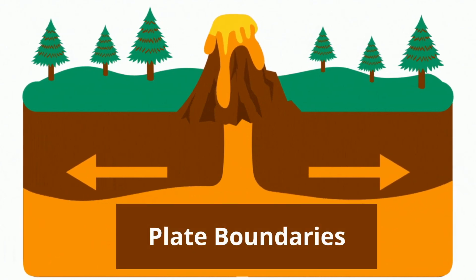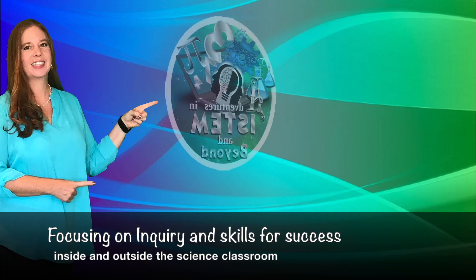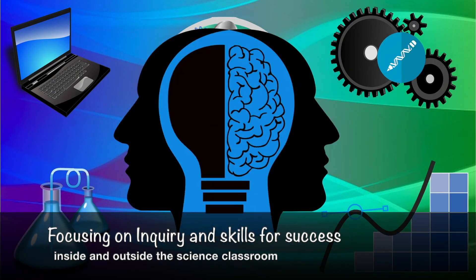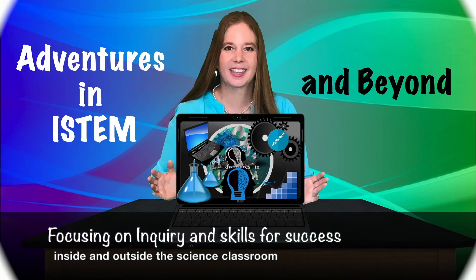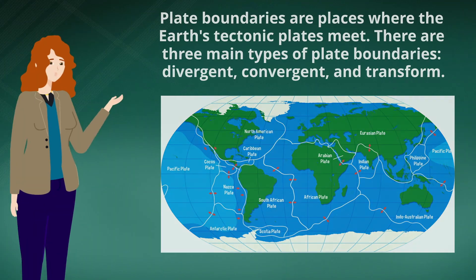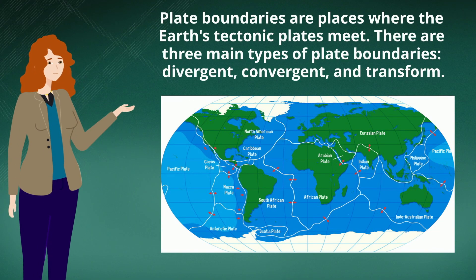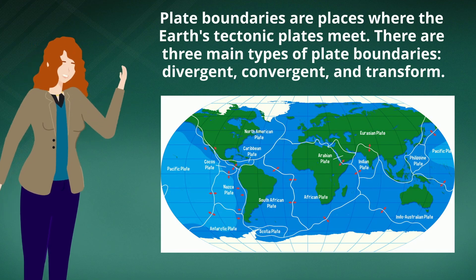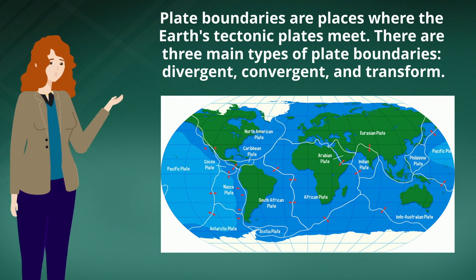Plate boundaries are places where the Earth's tectonic plates meet. There are three main types of plate boundaries: divergent, convergent, and transform.